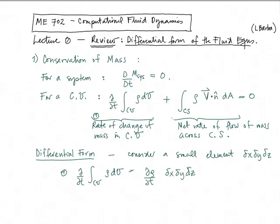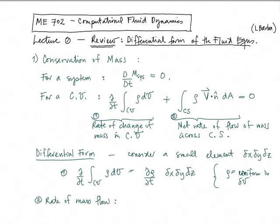Basically here, we assume that rho is uniform in the differential volume because the differential volume is very small — the element is very small. So rho is uniform and we write the first term. Now we want to write the second term, which is the rate of mass flow in the continuity equation. For this term, the rate of mass flow, we're going to imagine a little cube — a differential volume of the fluid — and look at the flow rate across this little cube.